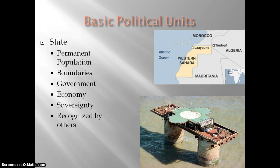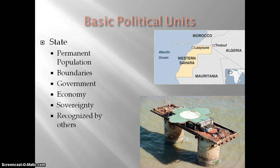Now when we think about states, especially living in the United States, we typically think of the state as a subset of the larger country. Within political geography, the state has a different meaning — think of the state as the country. A state is a territory that contains a permanent population, recognized and established boundaries, an effective government, a working economy, and sovereignty, and is also recognized by other states in the world. Sovereignty means the ability of a state to control its own affairs, its own institutions, and its territory and population.